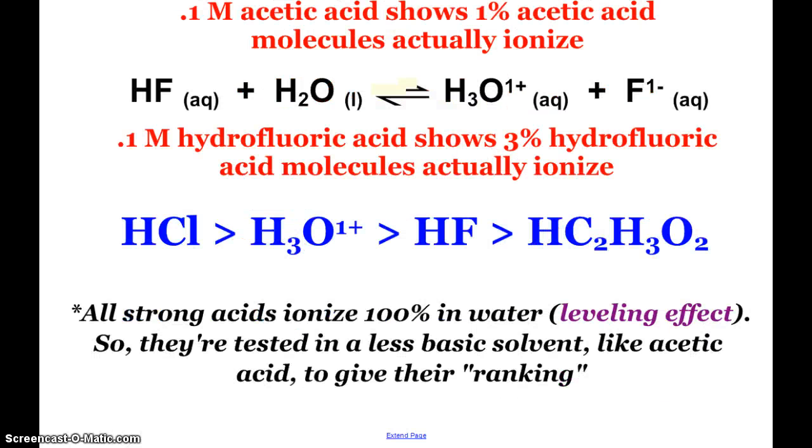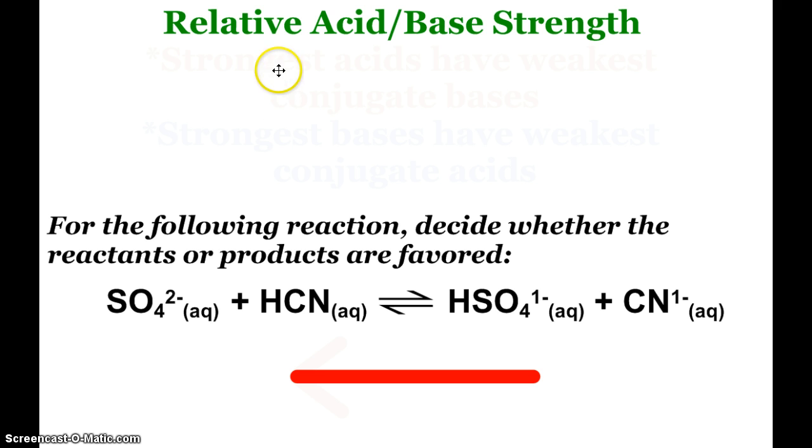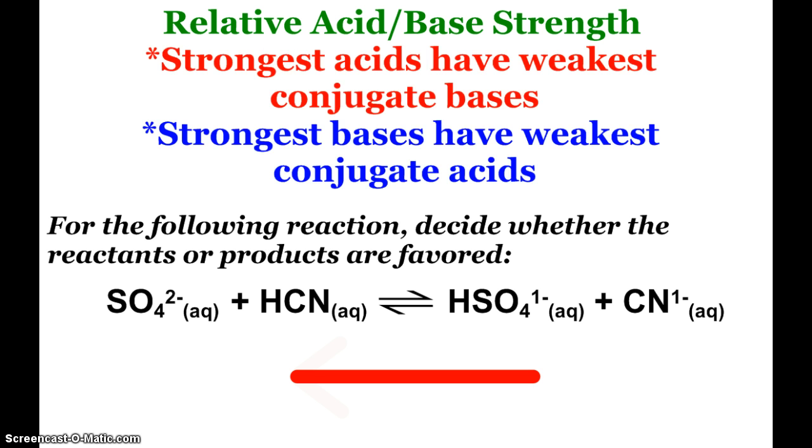Now when we got to the strong acids, those six strong acids we talk about, they all ionize 100% in water. It's what we call a leveling effect. So they have to be tested different ways, for example, in a less basic solvent, like acetic acid, in order to find their ultimate rankings. But again, you should check that table out in your book, I believe, yes, page 631, and it shows the ranking of our acids and bases. And what you can deduce from that is that our strongest acids have the weakest conjugate bases. Our strongest bases have the weakest conjugate acids, a seesaw effect. And you can see that on that chart.